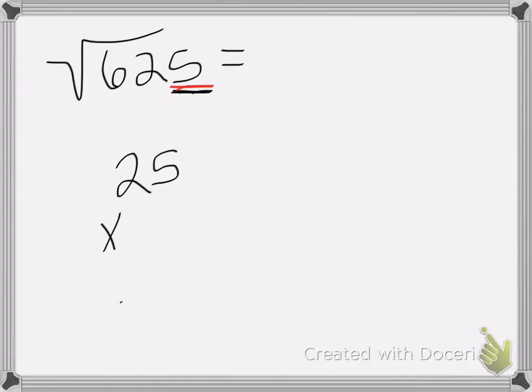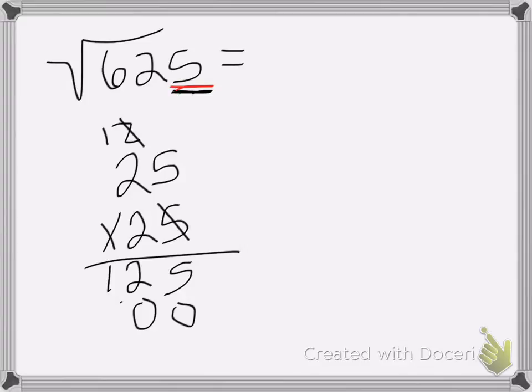So to do that, I'm going to do 25 times 25. 5 times 5 is 25. Carry the 2. 2 times 5 is 10. Carry my 1. 2 times 2 is 4 plus 1 is 5. Add those together. 5, 2, 6. So yes, the square root of 625 is equal to 25.